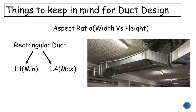Another important consideration is the aspect ratio of the rectangular duct. The minimum allowed aspect ratio is 1 to 4. For example, if your duct height is 200 mm, the width of the duct should not exceed 800 mm. This ratio plays a major role in duct sizing.